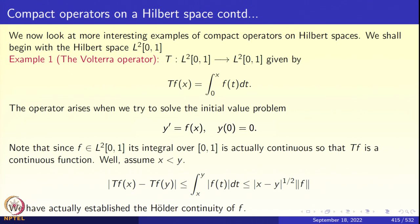Since f is in L2 and L2[0,1] sits inside L1[0,1] by the Cauchy-Schwarz inequality, integrating an L1 function from 0 to x produces a continuous function. So T(f)(x) is actually continuous — better than L2. In fact, the operator T is mapping L2[0,1] into C[0,1]. Let us do something better and prove that T(f)(x) is uniformly continuous.